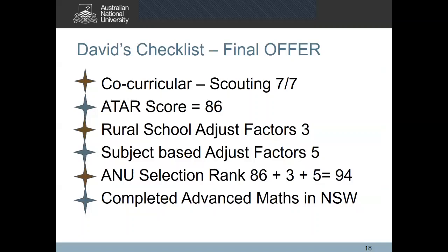I've created another checklist for David once he completes his year 12. We already know that he meets the co-curricular requirements. After completing year 12 he receives an ATAR score of 86. Since he goes to a rural school, he receives three equity-based adjustment factors. But now that he has completed year 12, he was also eligible for five subject-based adjustment factors. So his final ANU selection rank comes out to be 94.